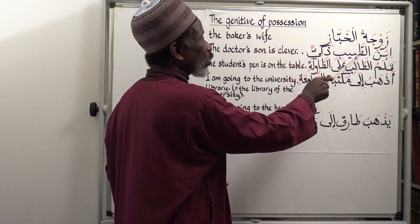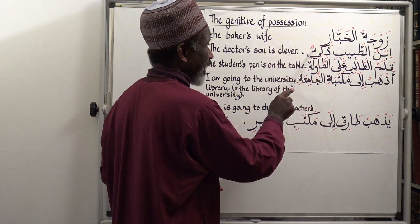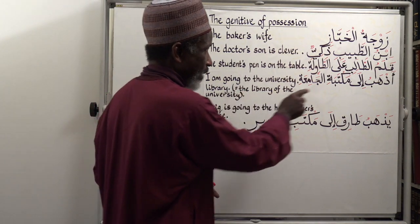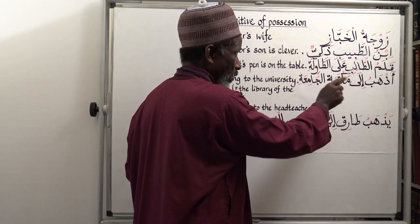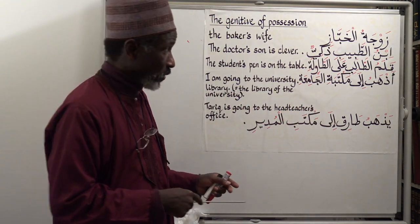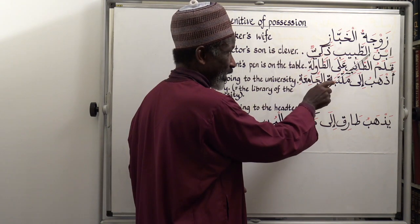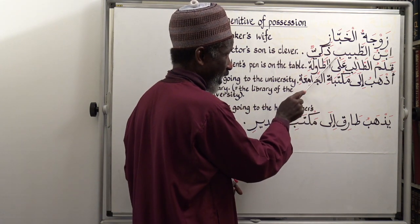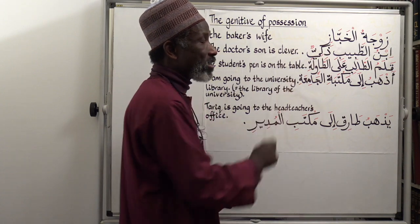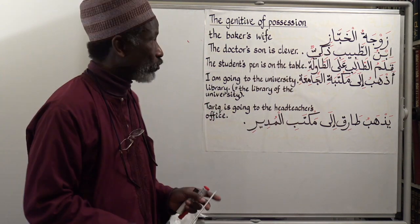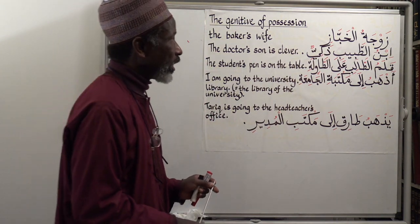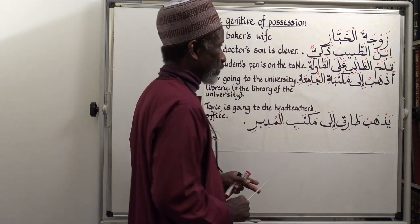Ibn tabibi — the doctor's son. Ibn — his son belongs to the doctor. Because al-tabib here is defined, we have kasra, and then we have the predicate: the doctor's son is clever. Ibn at-tabibi, the clever one. Then: qalam at-talibi — the pen belonging to the student, the student's pen in English. Ala at-tawilati — is on the table.